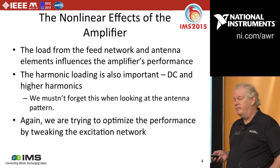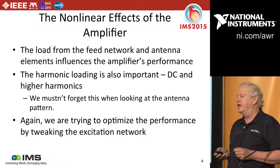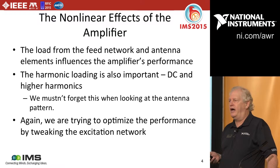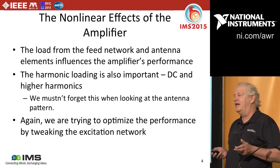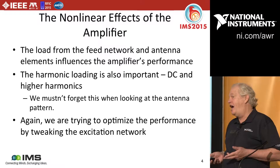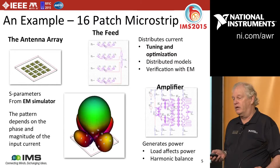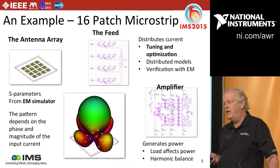Let me show you how this works with this example. One thing a lot of people don't appreciate on the power amplifier end of things is that's a nonlinear simulation. When you look at this interaction, you want to include DC and higher harmonics. The input impedance of your antennas at higher harmonics could adversely affect your power amplifier and feed network. The example we're going to look at, done in Microwave Office version 12, is a simple patch array — a microstrip array, four by four.